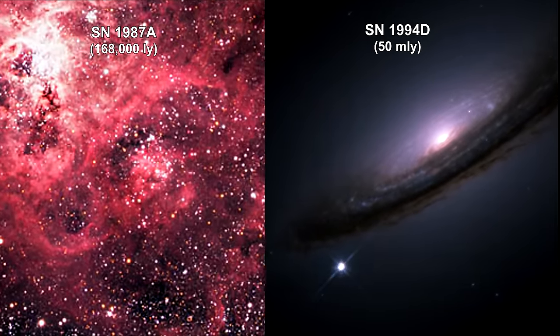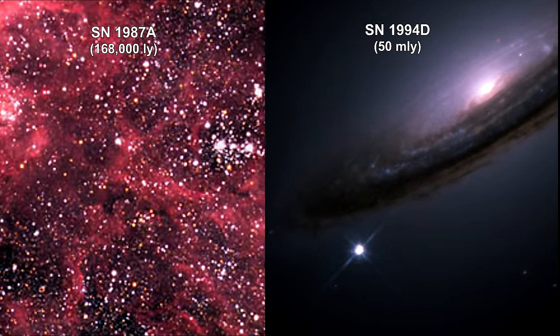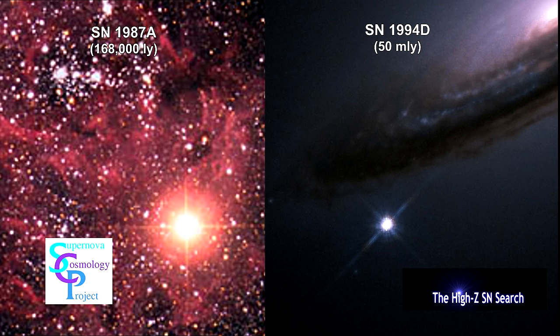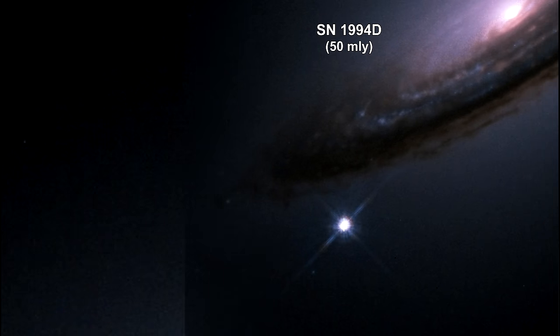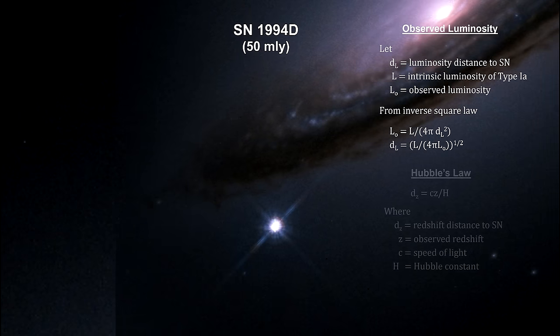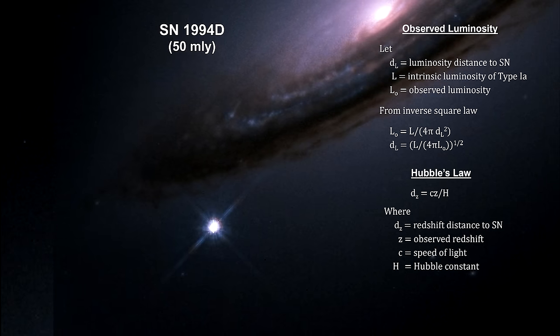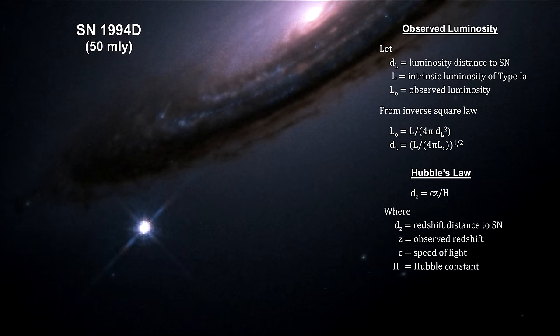After Hubble discovered the universe was expanding, it was assumed that it started off with a tremendous expansion rate. And because of the gravitational attraction of all the matter in the universe, the expansion would be slowing down. Two major efforts were started in the late 1990s to prove that the universe's expansion was decelerating. Both groups used distant Type Ia supernova as their standard candles. Supernovae provide a luminosity reading that enables us to determine their distance via the inverse square law. This distance is called the luminosity distance. Type Ia supernovae also provide a redshift reading that gives us the distance via Hubble's law.